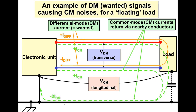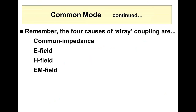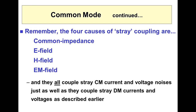Radio frequency currents easily flow through stray capacitances — 0.1 picofarad can look like a very low impedance. The air carries radio frequency energy very well; if it didn't, we could never use radio, TV, or cell phones. We've got four kinds of stray coupling — common impedance, E field, H field, and EM field — and they all apply to the common mode voltage and current noises just as well as they apply to the differential mode. So you could say we've got eight modes of stray coupling: common impedance, E field, H field, and electromagnetic field — differential mode and the same again for common mode.